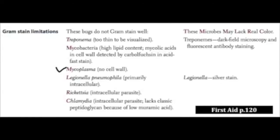Since mycoplasma doesn't have any cell wall, you can't use a cell wall inhibitor on it. Which is why, if any of you watching this video have ever had one of these kinds of infections, the treatment is azithromycin, which works at the level of the ribosome and not at the level of the cell wall — so it's a different way that you kill this bug.